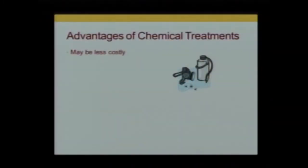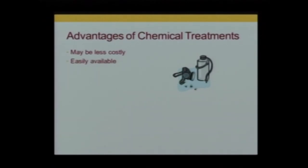It typically takes more than one treatment. Big advantages to chemical treatments: they tend to be less costly, though there are costs associated with having to close areas and people's time. In terms of the products themselves, they tend not to be very expensive, and depending on the environment, can be very cost effective. They tend to be easily available here in the United States — we have a wide variety of properly labeled products, most based on pyrethroid chemistry.